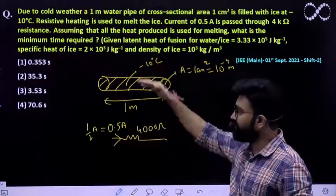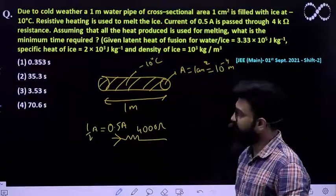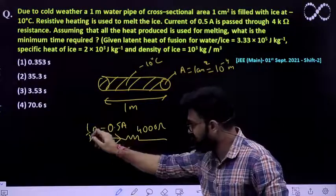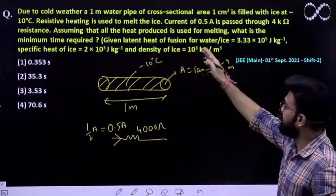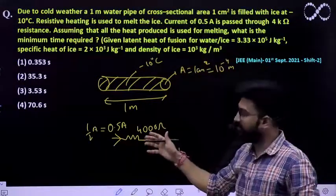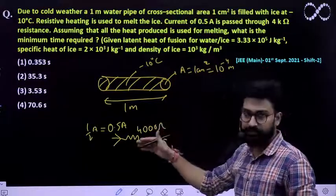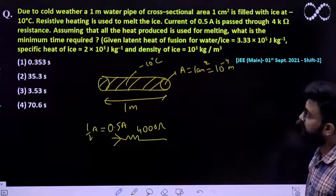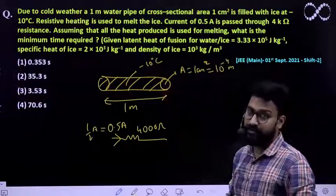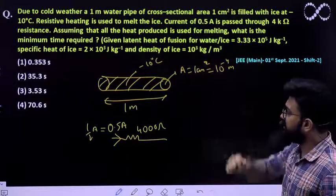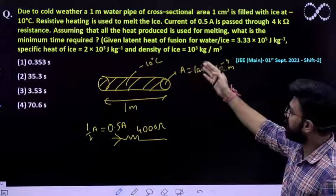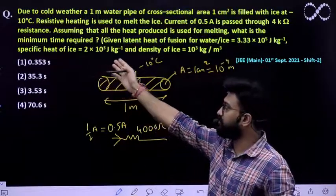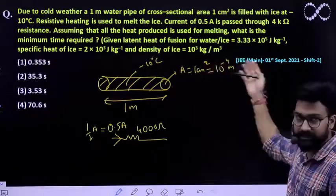This resistor is used to heat up the ice present in the pipe and eventually the ice will become water. Assuming that all the heat produced is used to melt the ice — meaning there is no heat loss to the external environment — what is the minimum time required to melt all the ice into water? The given latent heat of fusion of ice and water is 3.3×10⁵ J/kg, specific heat of ice is 2×10³ J/kg·K, and density of ice is 10³ kg/m³.